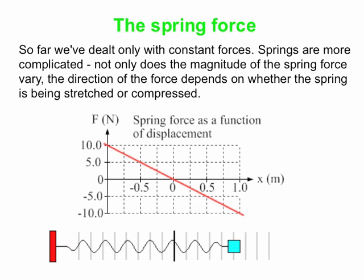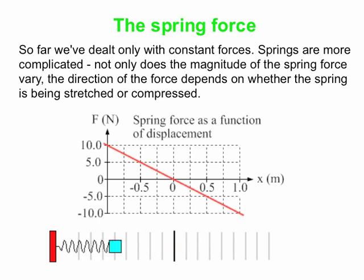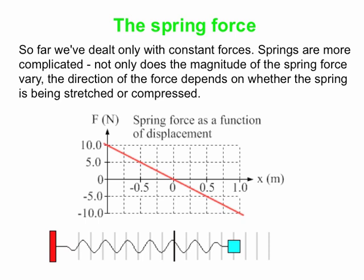On the other hand, if the displacement of the object is to the left, then you're compressing the spring, and the spring force is to the right. It's a more complicated force — not a constant force — but it's about as simple as we can get: a linear force, linearly dependent on position. When we talk about simple harmonic motion, we're talking about a special case of a linear force. You double the distance, you double the force. It doesn't go as x squared or square roots. It's a straight-line force versus position graph.